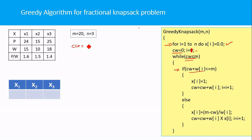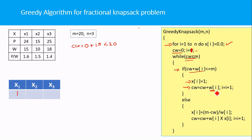Initially the current weight is 0. Suppose I am adding item number one — its weight is 15, so 0 plus 15 is less than 20. I go inside the if condition and set the fraction of the first item to 1, meaning all 15 units of item one are added to the knapsack. I then increase current weight by the weight of item one, making it 15, and increment i.